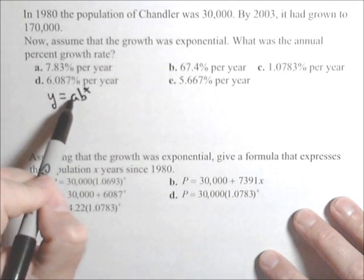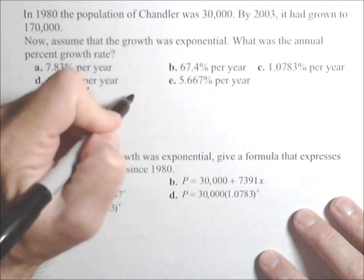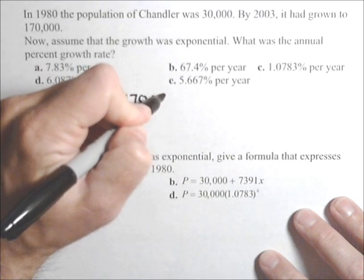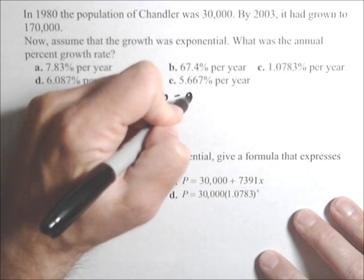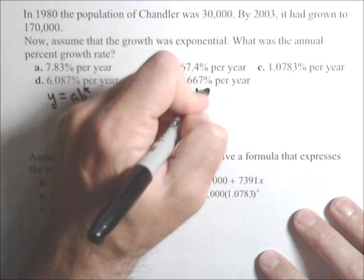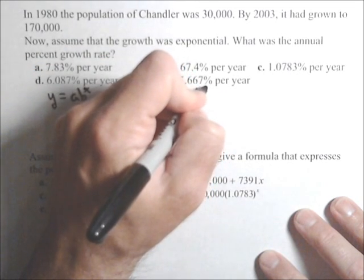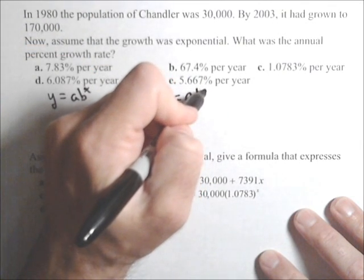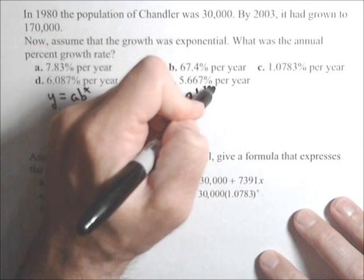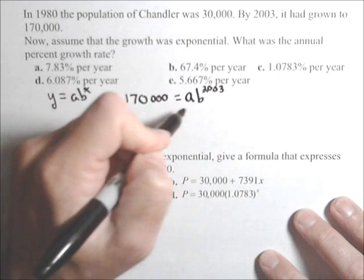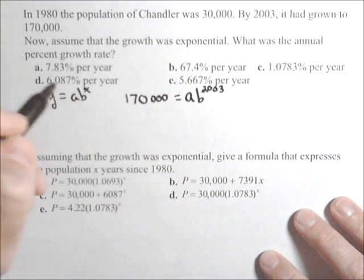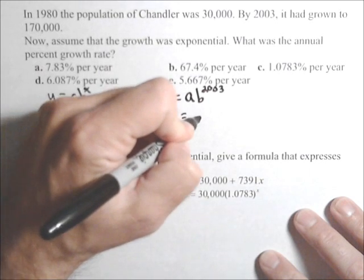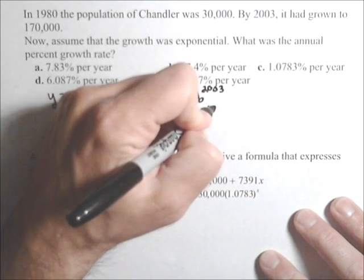I'll set up an exponential model for each of these data points. We know that the output is 170,000 when the time was 2003. You can use the whole year or the number of years after 1980. I'll show you how it works with the whole year because that's more general and can apply to many problems. The other equation is 30,000 = ab^1980.